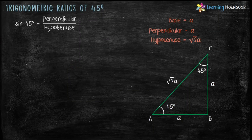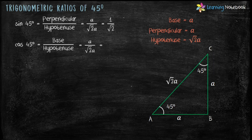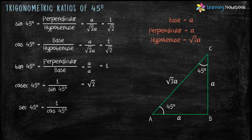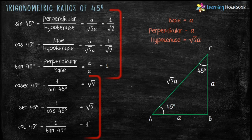Putting the values: sin 45° equals a upon √2·a equals 1/√2. Cos 45° equals a upon √2·a equals 1/√2. Tan 45° equals a upon a equals 1. Cosec 45° equals 1 upon sin 45°, which equals √2. Sec 45° equals 1 upon cos 45°, which equals √2. And cot 45° equals 1 upon tan 45°, which equals 1. These are the values of trigonometric ratios at theta equals 45°.